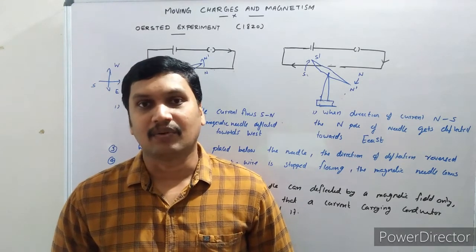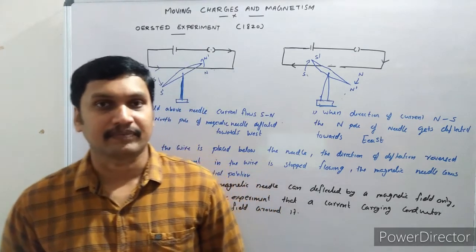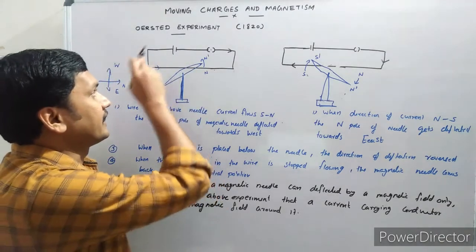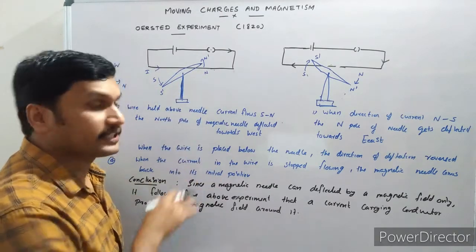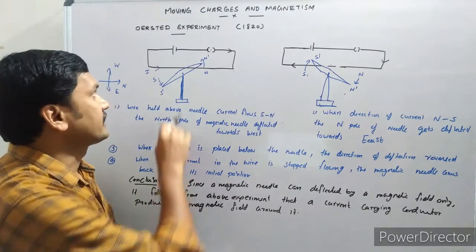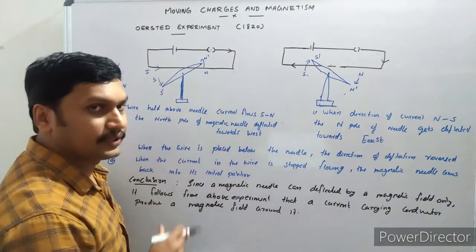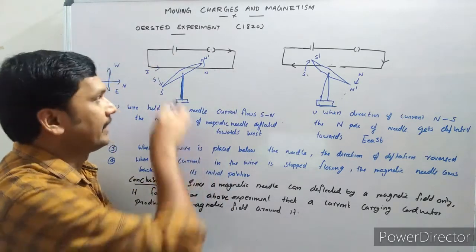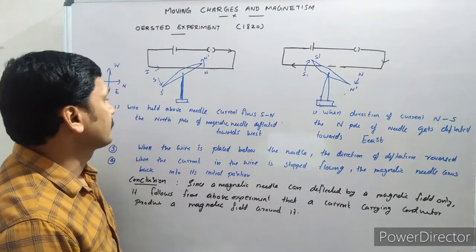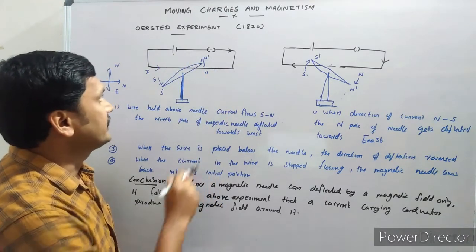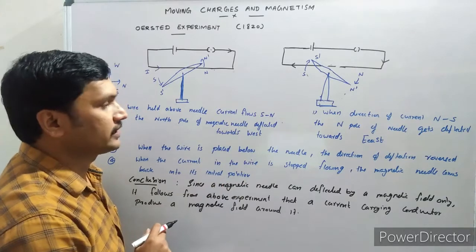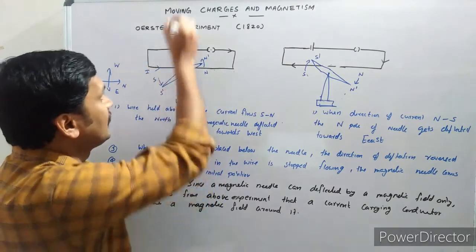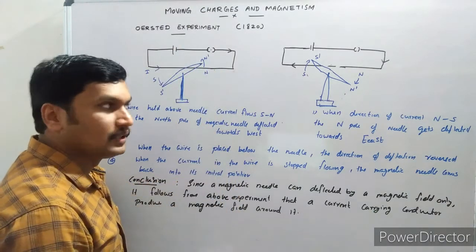Oersted took a magnetic needle and a current-carrying conductor. The magnetic needle is placed just below the current-carrying conductor. The current is flowing from south to north. When the current is passing from south to north, the north pole of the magnetic needle is deflected towards west. This is the first experiment.